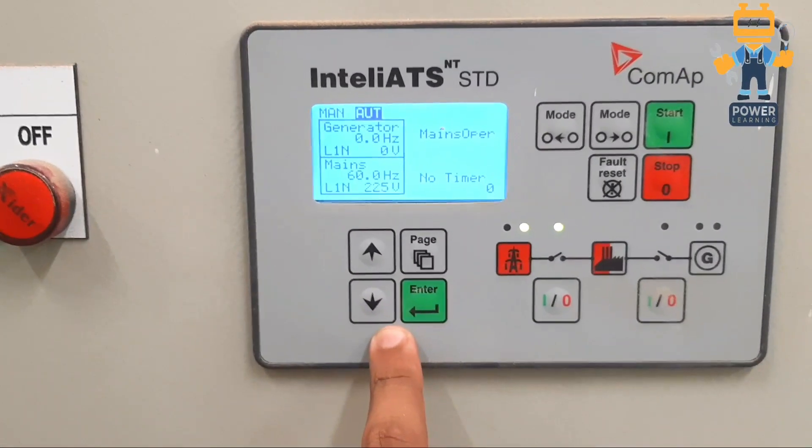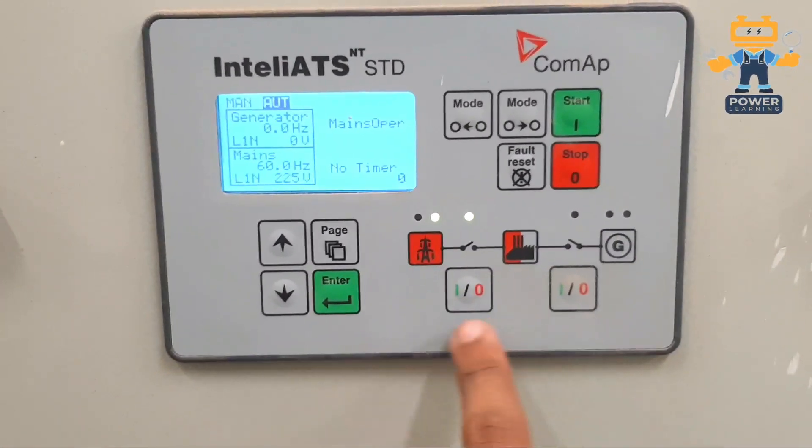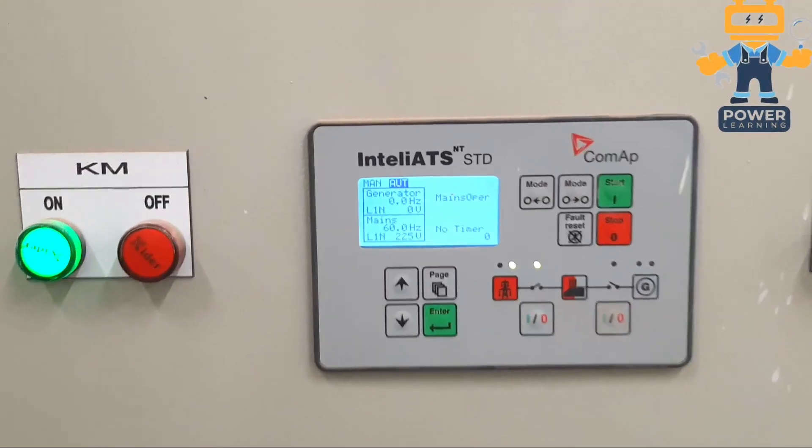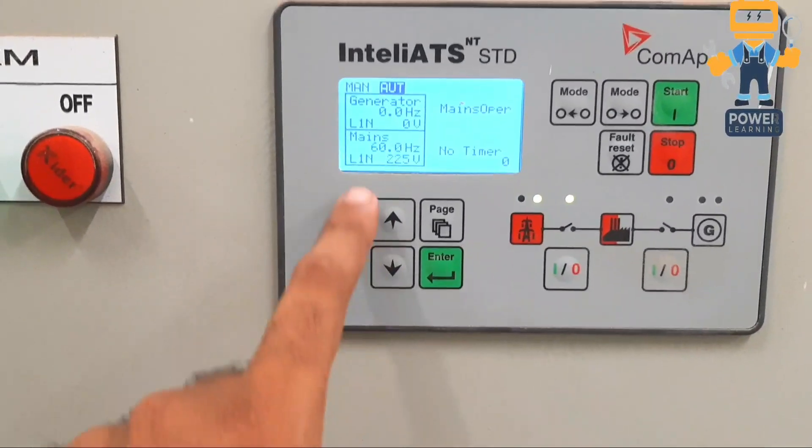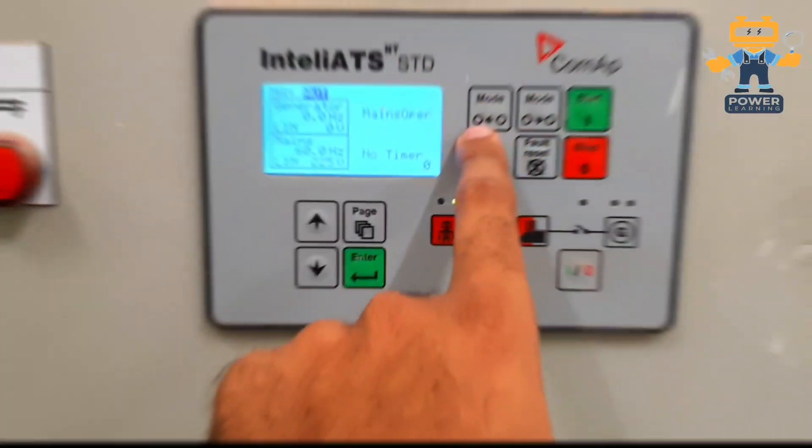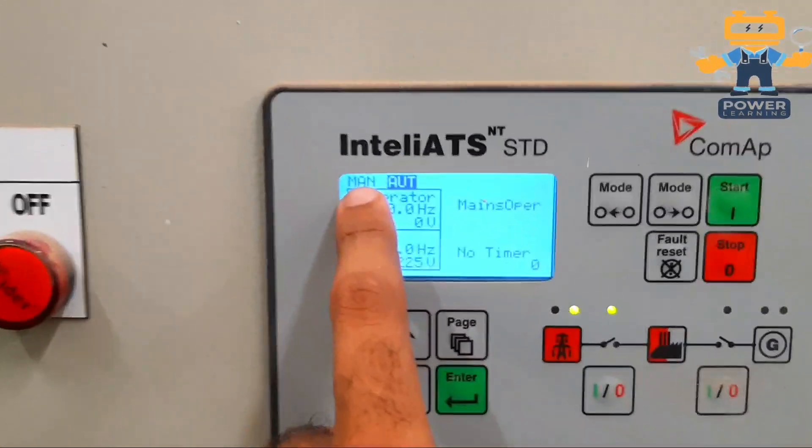Here we have four push buttons here, five push buttons here, and two push buttons here. What are the functions of these push buttons? These two are for scrolling up and down, this is for page, and this is for enter. Here we have two mode selection buttons.